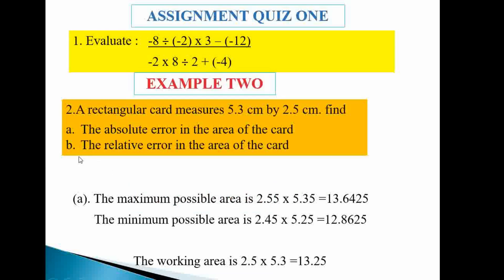Example two: A rectangular card measures 5.3 cm by 2.5 cm. Find (a) the absolute error in the area of the card, and (b) the relative error in the area. The absolute error is obtained from maximum possible area minus minimum possible area, divided by 2.